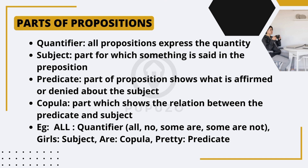For example, let's consider the proposition 'all girls are pretty.' Here, 'all' is the quantifier, 'girls' is the subject, 'are' is the copula, and 'pretty' is the predicate. Understanding these parts allows us to decipher the intended meaning of propositions and comprehend the relationship between the subject and the predicate.